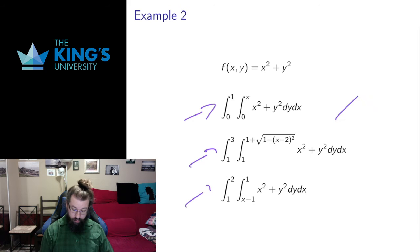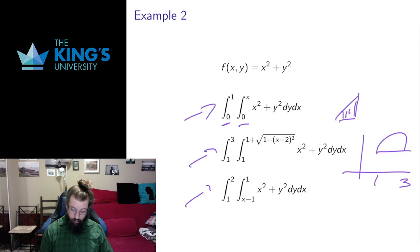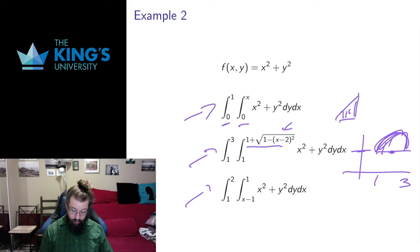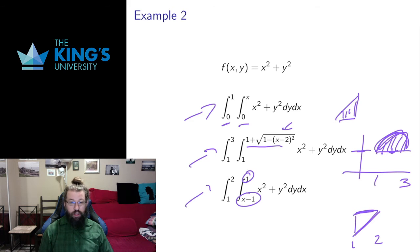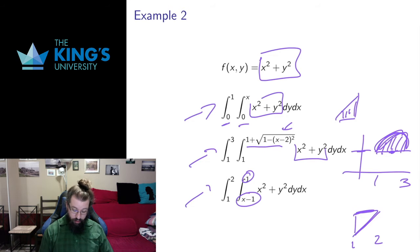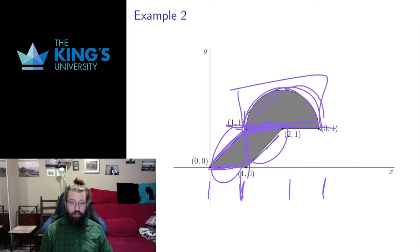Here are the three integrals. For the first piece — the triangle — x goes from 0 to 1 and y goes from 0 to x. For the half-circle piece, x goes from 1 to 3, and y goes from 1 up to the arc — which I found by taking the circle centered at (2,1) and solving for the y-coordinate taking the positive square root. Then the last piece: x goes from 1 to 2, with y going from the line x minus 1 up to y = 1. The function to integrate is x² + y², which is the same in all three pieces, but the bounds are quite different in each to represent all the details of this complicated shape.